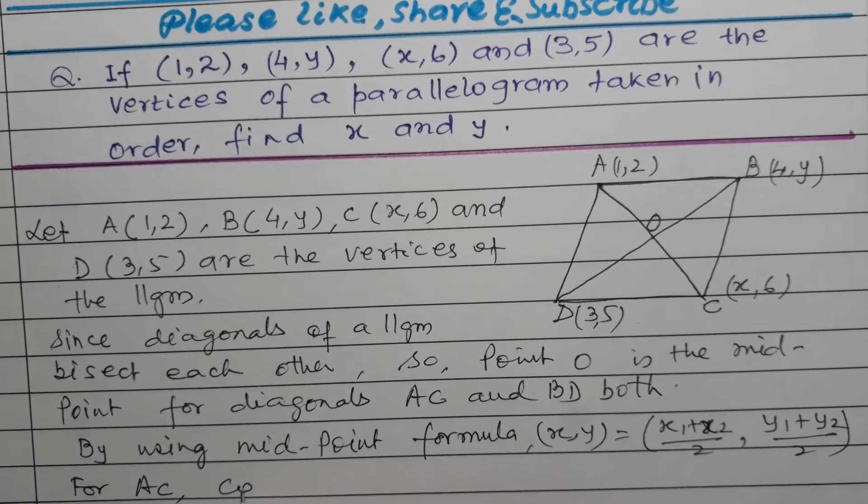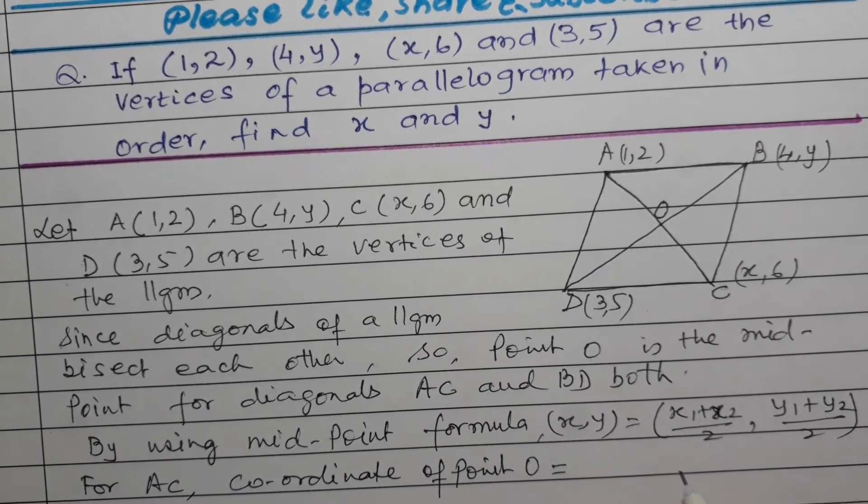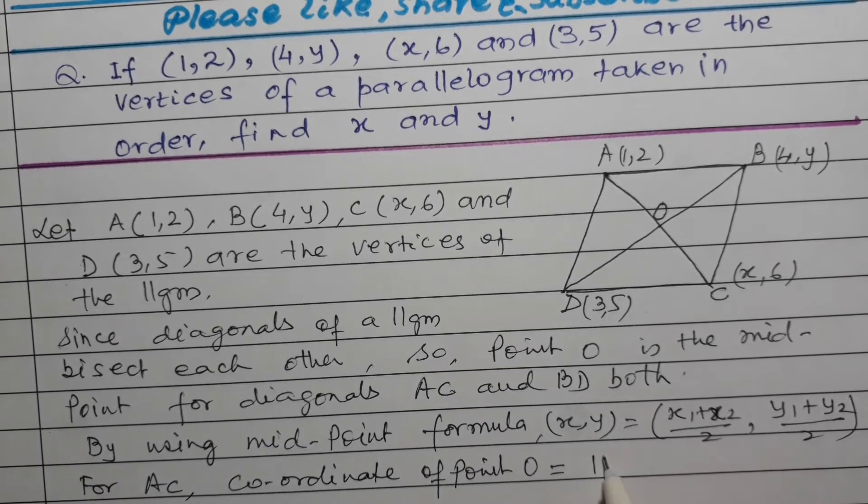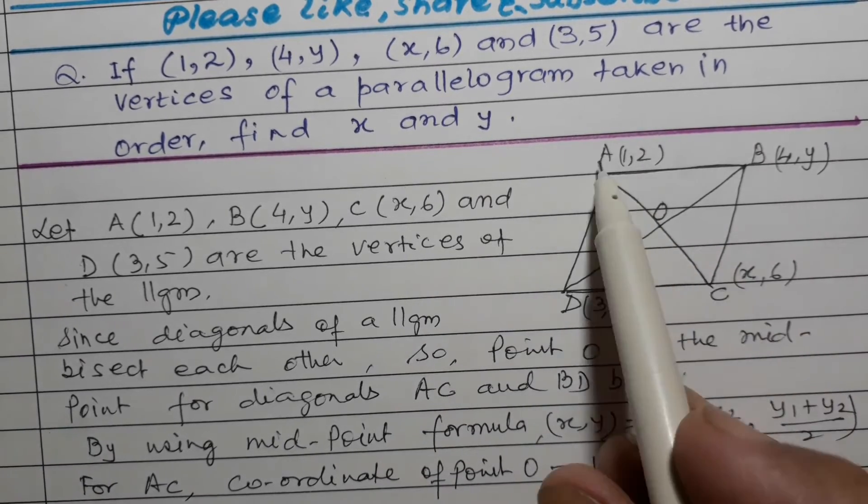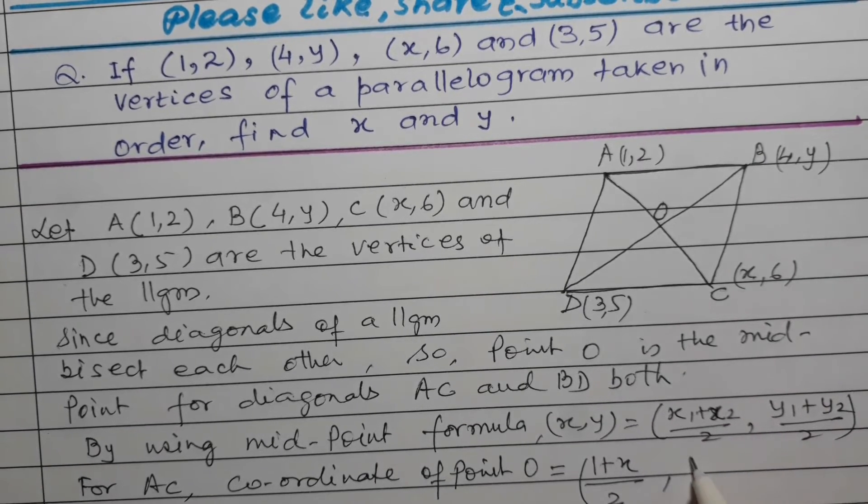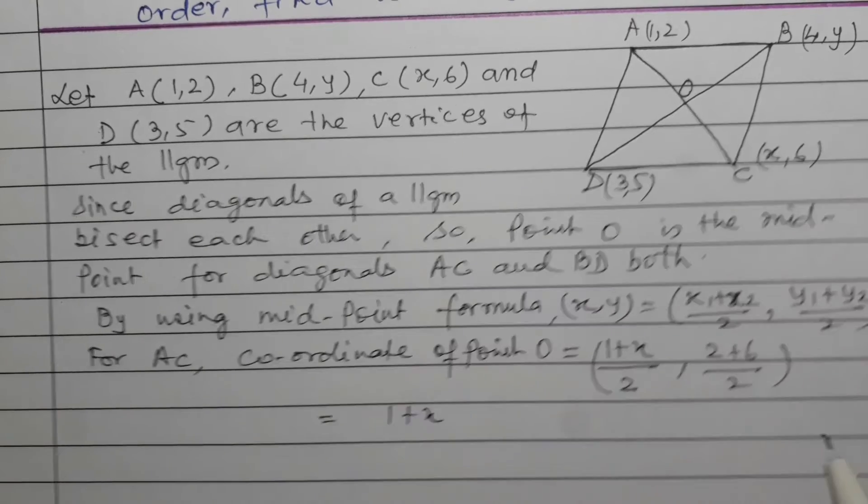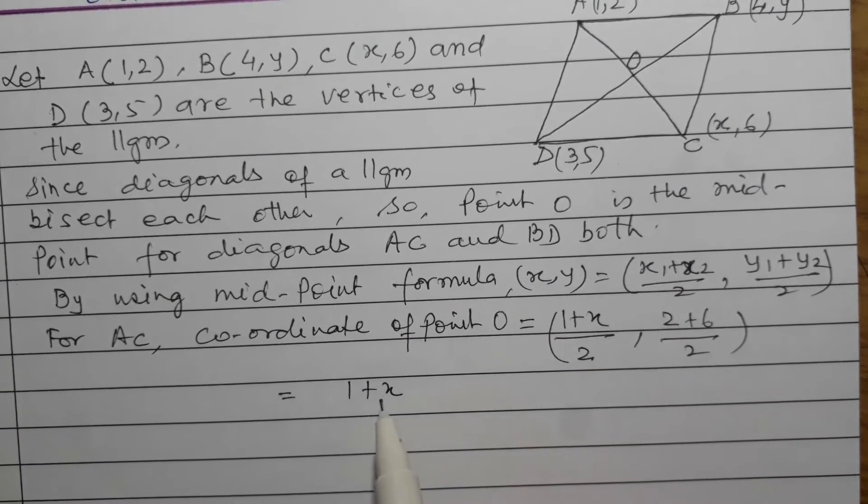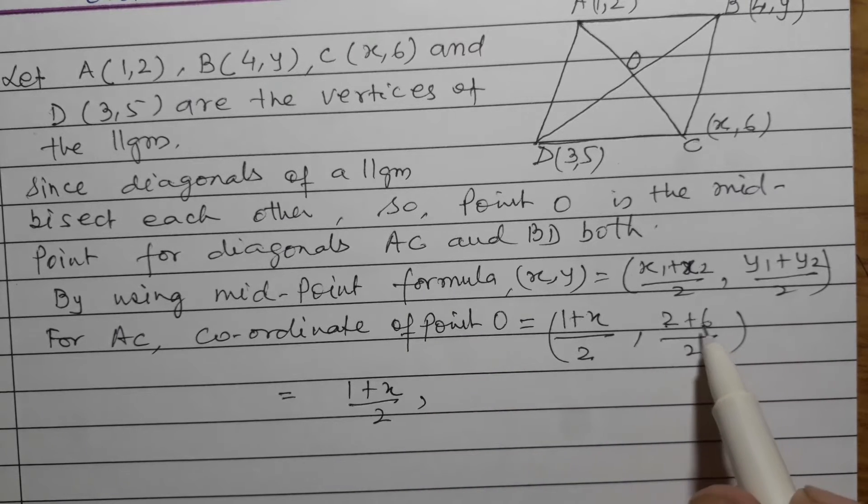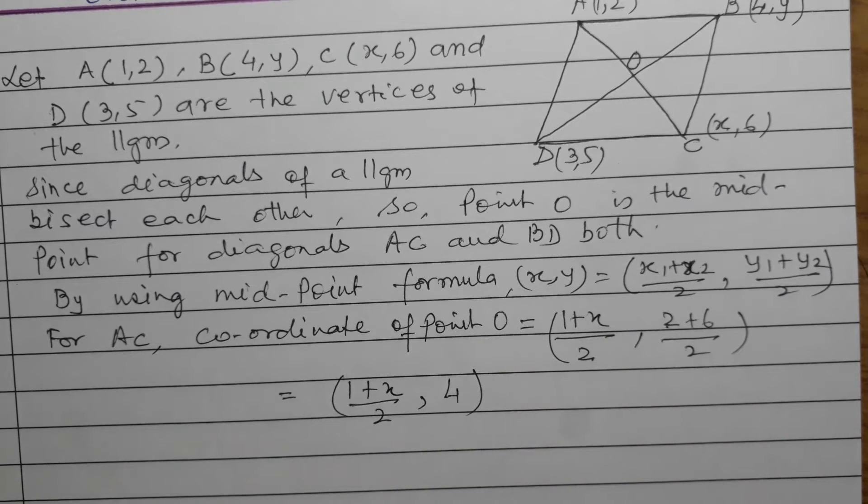For AC, coordinates of point O: For AC, this will be equal to x1+x2, so it becomes (1+x)/2, and for y it becomes (y1+y2) which is (2+6)/2. Taking this forward, this becomes (1+x)/2, and this becomes (2+6)/2 = 8/2 = 4. So for AC, the x and y coordinates are ((1+x)/2, 4).